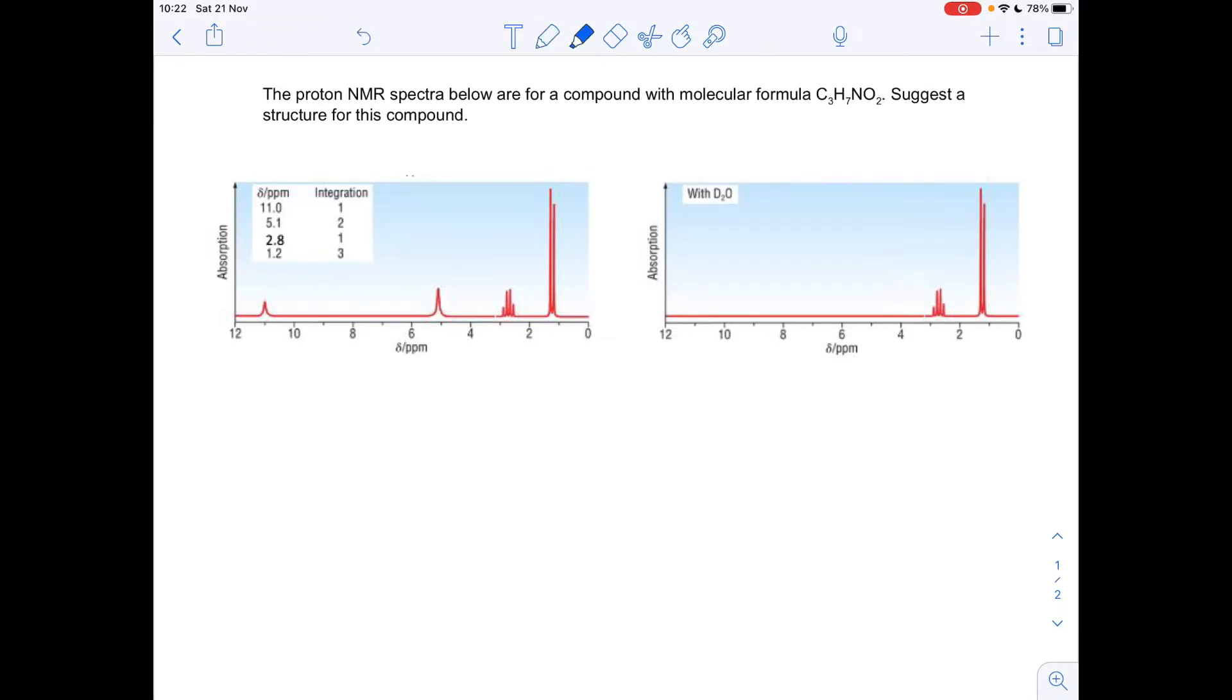So the first thing we're just going to say is you'll notice that the spectrum on the left's got all of the peaks on. That's not done in D2O. And then when you put it in D2O, you've lost these two peaks here. So they're going to be due to OH protons or NH protons.